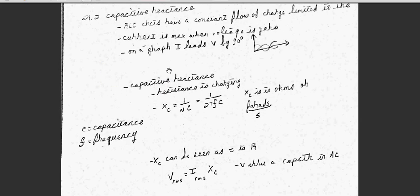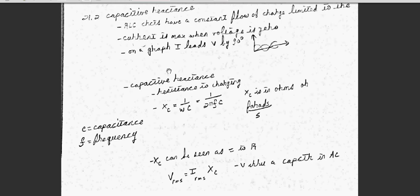21.2, capacitive reactance. RLC circuits have a constant flow of charge, and that is limited to your capacitance. So your capacitor is going to limit that, your flow. Your current is the max when voltage is zero. And on a graph, current leads your voltage by 90 degrees. This isn't as important, unless you're taking calculus-based physics, where you use a lot of the trig integrals. When you use a lot of your trig integrals, but that's sort of beyond the scope of this video.